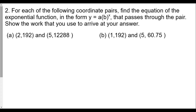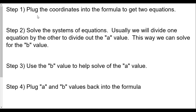Show the work that you use to arrive at your answer. Like last time, we're going to find our work by doing the following: step one, plug the coordinates into the formula to get two equations. Step two, solve the system of equations — except this time we'll divide one equation by the other to divide out the a value, so we can solve for the b value. Step three is to use the b value to help solve for the a value. Step four, plug the a and b values back into the formula.